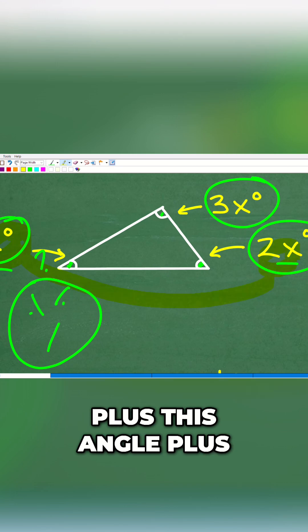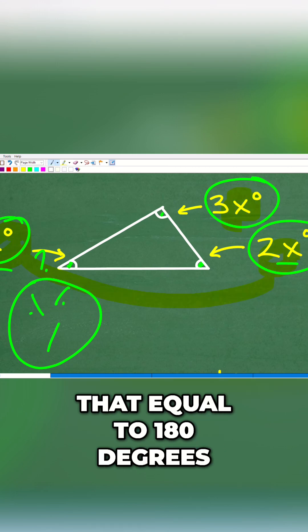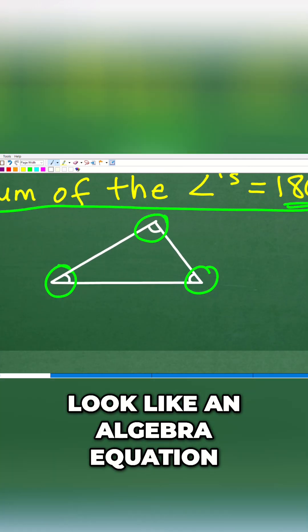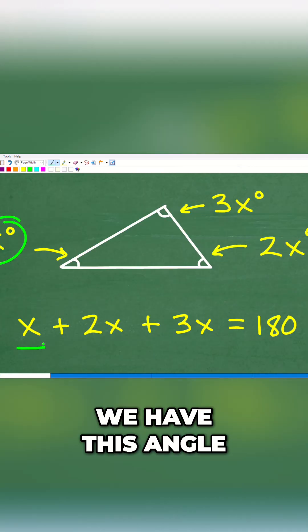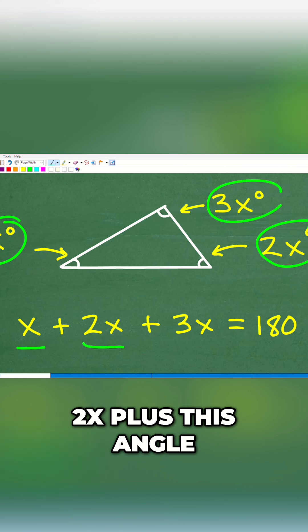That's going to look like an algebra equation. We have this angle x plus this angle 2x plus this angle 3x is equal to 180 degrees.